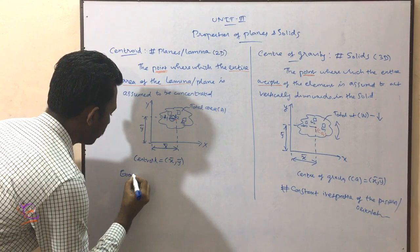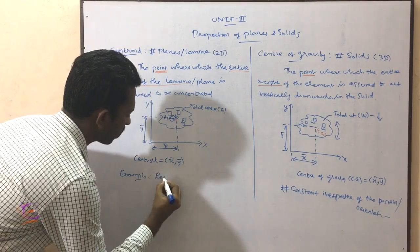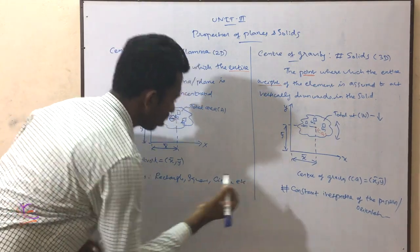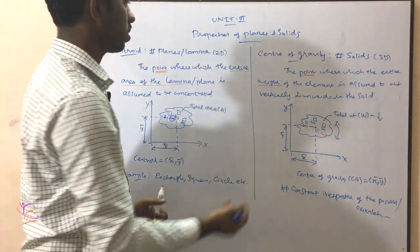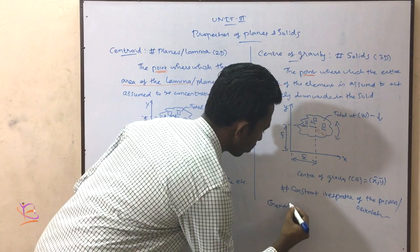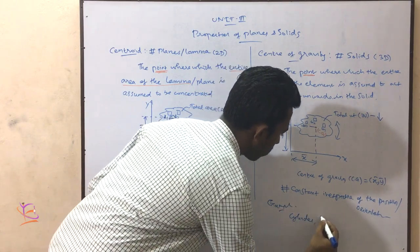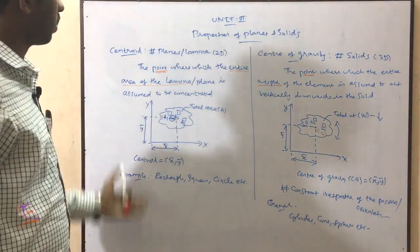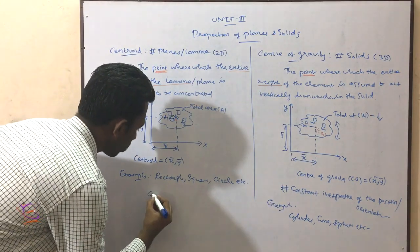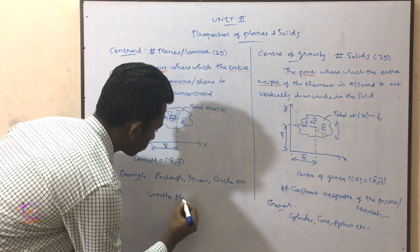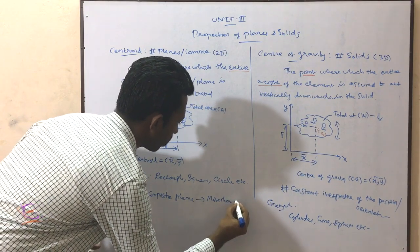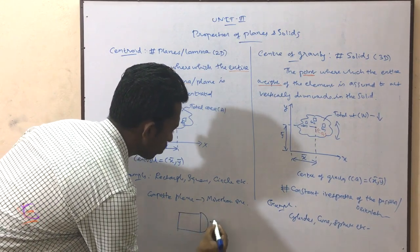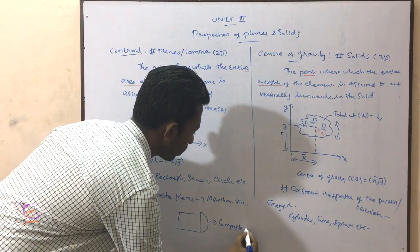Examples of plane elements include rectangle, square, circle, and so on — we have the basic formula for these basic elements. Examples of solid elements include cylinder, cone, sphere, and so on. In the centroid case, you can work with composite planes, meaning more than one basic element. For example, a rectangle combined with a semicircle — this is called a composite plane or lamina.